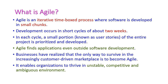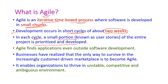Let us discuss more deeply about agile. What is agile? Agile is an iterative time-boxed process where software is developed in small chunks. Development occurs in short cycles of about two weeks. In each cycle, a small portion of the entire project is prioritized and developed. Agile finds applications even outside software development. Businesses have realized that the only way to survive in the increasingly customer-driven marketplace is to become agile. It enables organizations to thrive in an unstable, competitive, and ambiguous environment.